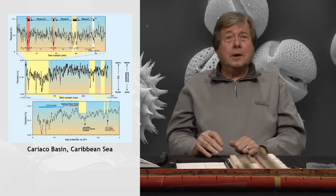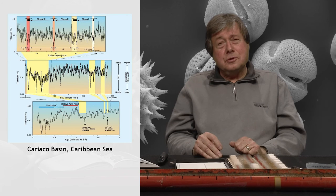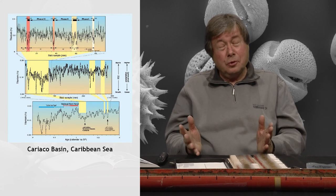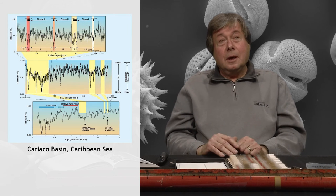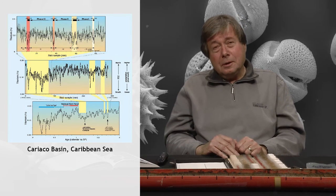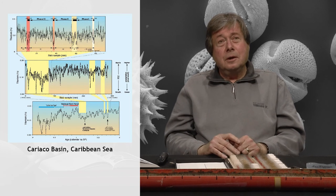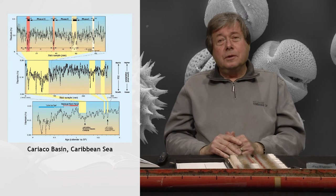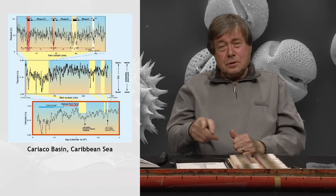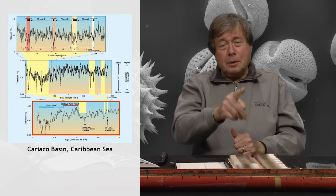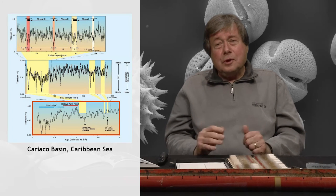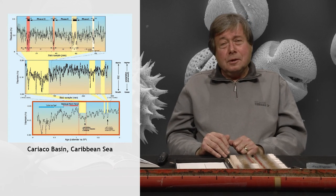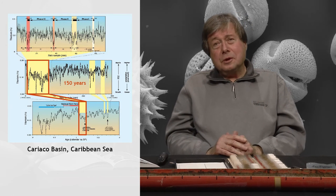Now we go to a deep sea core. And this record is a titanium record, comes from the Cariaco trench located offshore Venezuela, also in the Caribbean basin. And titanium is a terrestrial element and is transported to the ocean under dry conditions. Here you see a record of the last 2,000 years. And you see that several changes in the titanium record show that climate conditions are quite unstable. Well, the yellow part is zoomed in and then we go to the middle part of this figure.